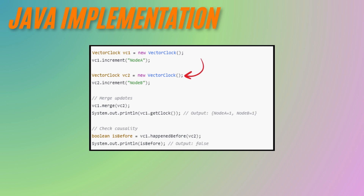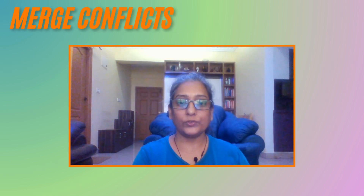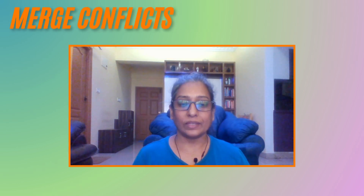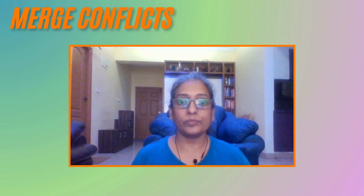Here is a simple Java implementation of a vector clock. Each node maintains a vector clock, incrementing its counter with each change. When updates are shared, clocks are compared to detect concurrent changes. If two clocks don't dominate each other, a conflict is flagged. If two vector clocks are concurrent — that is, neither happened before the other — how are the conflicts resolved?